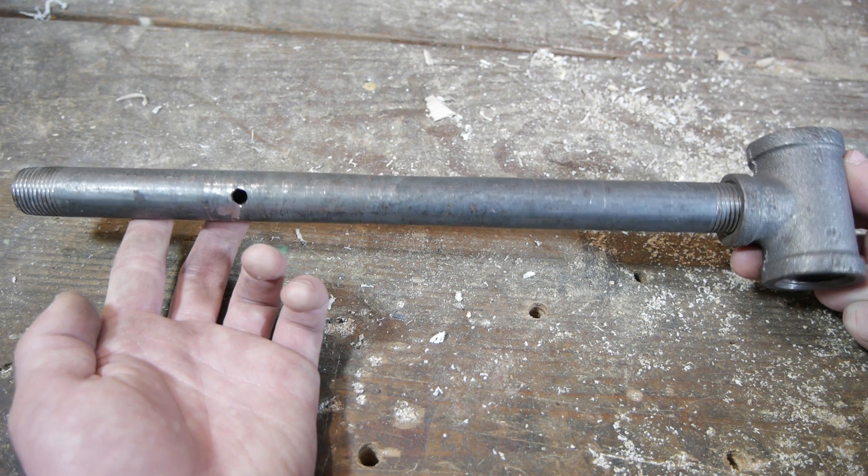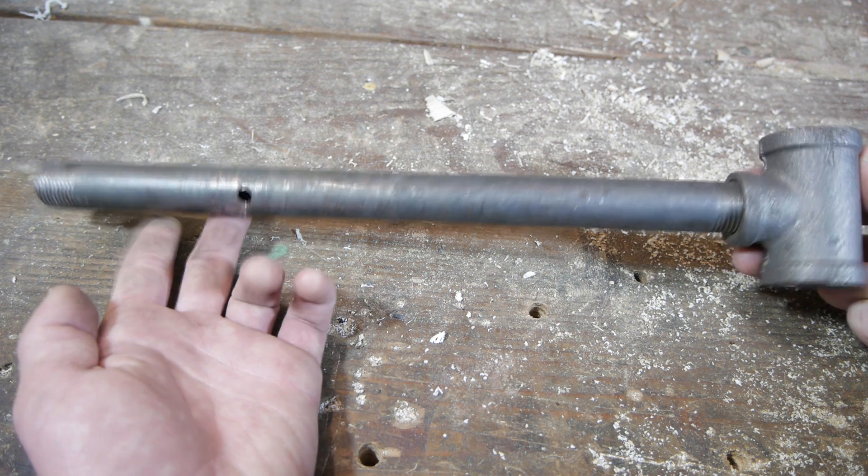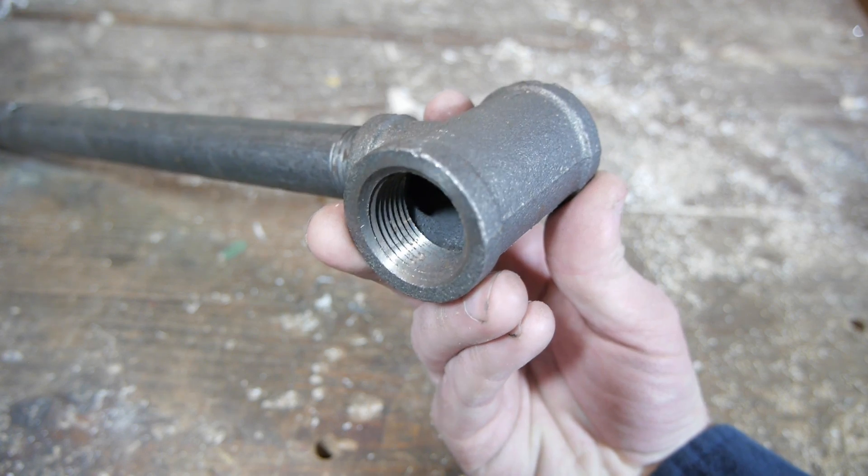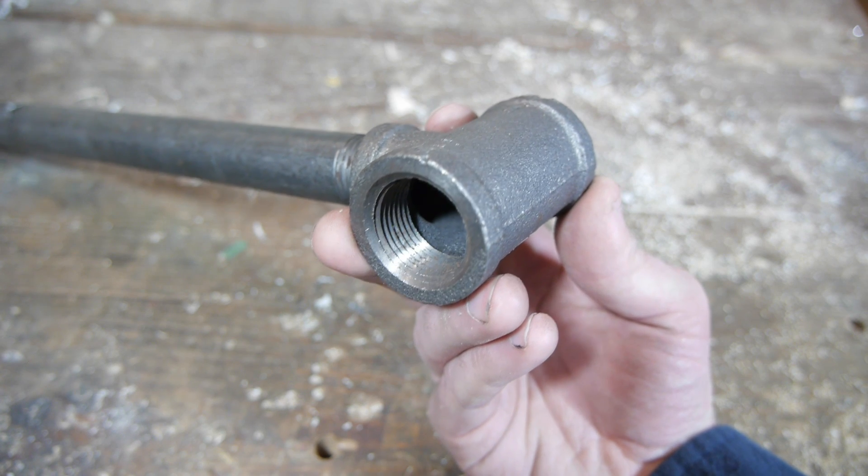The other part that I've made for this tool is this length of 1 1/2 inch pipe with a hole drilled toward one side and a tee threaded onto the other. This is a 1 1/2 by 3 1/4 inch tee that I'll simply be using as a receiver for a handle.